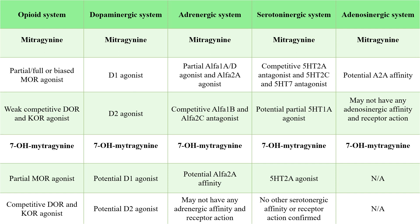Now let's delve into the overall pharmacological profile of mitragynine and 7-hydroxymitragynine. Mitragynine is believed to function as either a partial, full, or biased agonist of mu opioid receptors. When it comes to the delta and kappa opioid receptors, research suggests it acts as a weak competitive agonist. In the dopaminergic system, mitragynine acts as an agonist for both D1 and D2 receptors. It also exhibits affinity for certain adrenergic receptors, functioning as a partial agonist of α1a and α1D receptors and agonist of α2a adrenergic receptors.